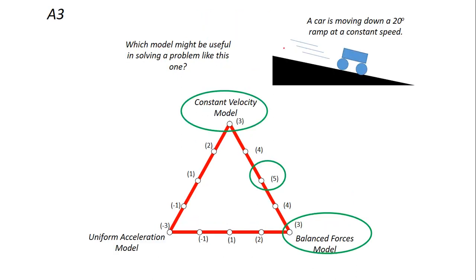Right, which model might be useful? The car's moving at a constant speed, so I can use the constant velocity model. But also we know at a constant speed, the forces are balanced. So in this case, depending on what they're going to ask me in this, would allow my brain to think which model would I use. But from the information given, all I know is that I can use both. So for maximum points here, for five points, you would have picked in the middle.